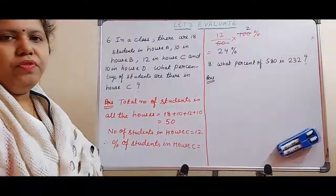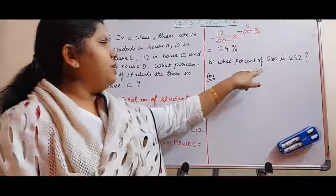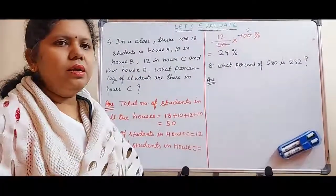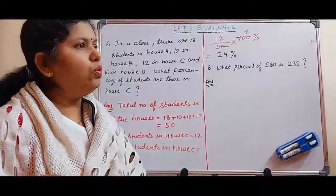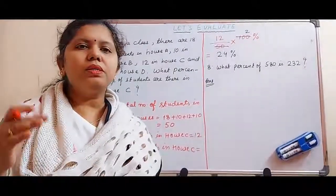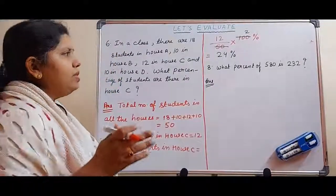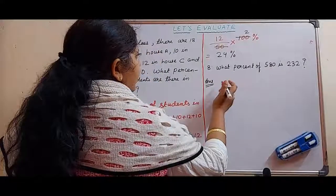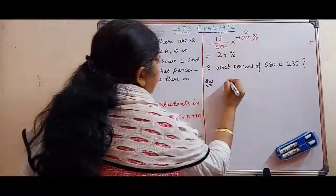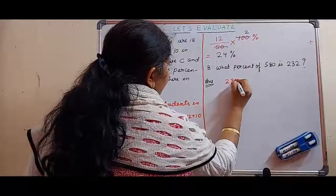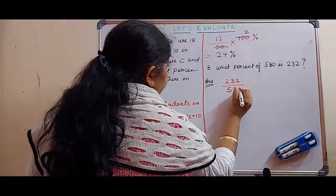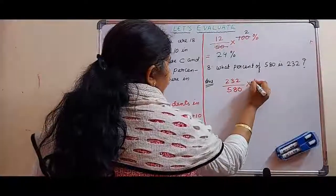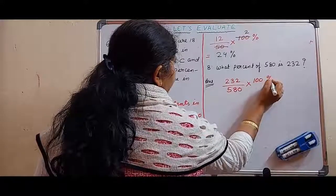Now we come to the last question of let's evaluate. What percent of 580 is 232? This is the method of how to express a number as a percentage of another number. You have to use that technique to solve this. Here we have to take out percentage of 232 out of 580. That means our answer will be 232 by 580. This is the fraction. Multiply it with 100 and put the percentage symbol.